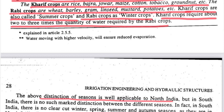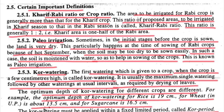So these are the two types of seasonal crops. The first important definition is Kharif-Rabi ratio, also called crop ratio. The Rabi crop has a larger irrigation area compared to Kharif crop. The formula is: area to be irrigated in Kharif season divided by area to be irrigated in Rabi season. This ratio is 1 is to 2, meaning Kharif area is half of Rabi area.